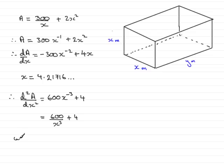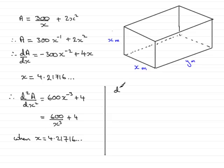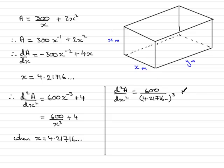All I need to do now is substitute x = 4.21716 into this expression. Starting a new column: when x equals this number, d²A/dx² equals 600 over 4.21716 cubed, plus 4. Working this out on your calculator, you'll find you get 12.